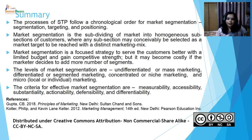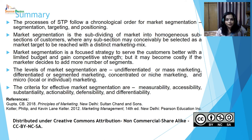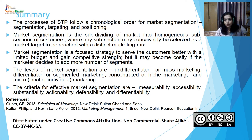To summarize: the STP process follows a chronological order — segmentation, targeting and positioning. Market segmentation is the subdividing of the market into homogenous subsections of customers where any subsection may be selected as a market target to be reached with a distinct marketing mix. Market segmentation is a focused strategy to serve customers better with a limited budget and gain competitive strength, but it may become costly if the marketer decides to serve more segments. The levels of market segmentation are undifferentiated or mass marketing, differentiated or segmented marketing, concentrated or niche marketing, and micro or local or individual marketing. The criteria for effective market segmentation are measurability, accessibility, substantiability, actionability, defensibility and differentiability. Thank you very much, students.